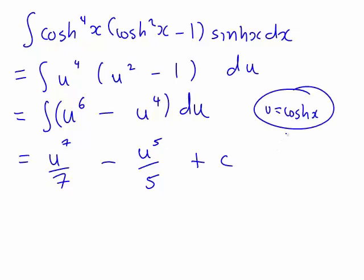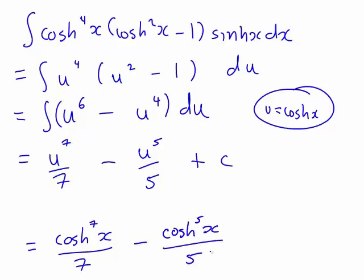And I've just written a little reminder there, u was cosh(x), so we can now rewrite all of this in terms of powers of cosh(x). So that's cosh⁷(x) divided by 7 minus cosh⁵(x) divided by 5 plus C.